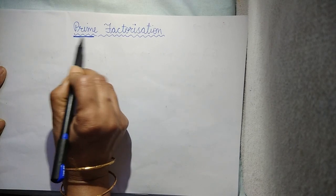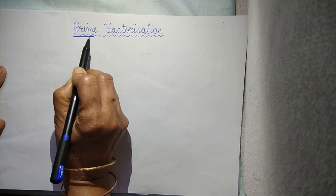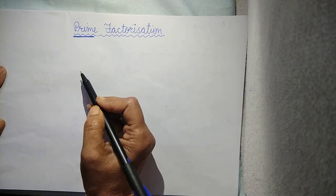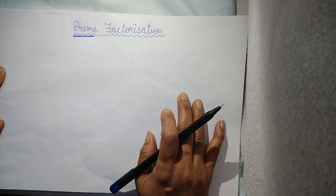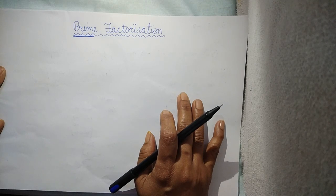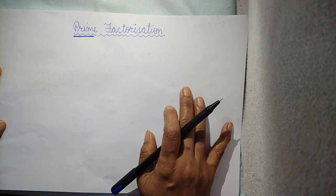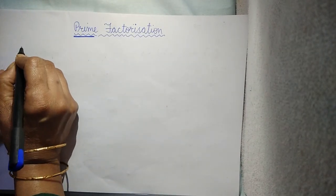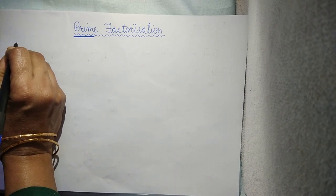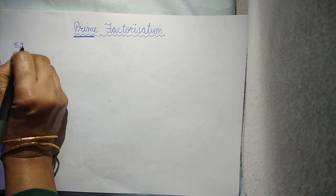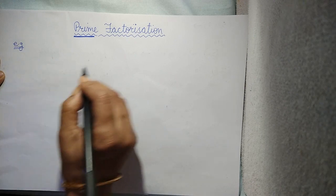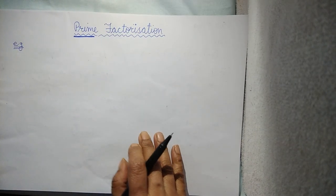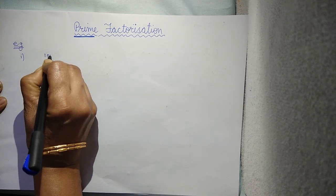As the name suggests, prime, so it means that in this method we will use the prime numbers, which you know very well. We will take this method by taking an example straight away. I will explain the prime factorization method by taking first example, let it be 100.